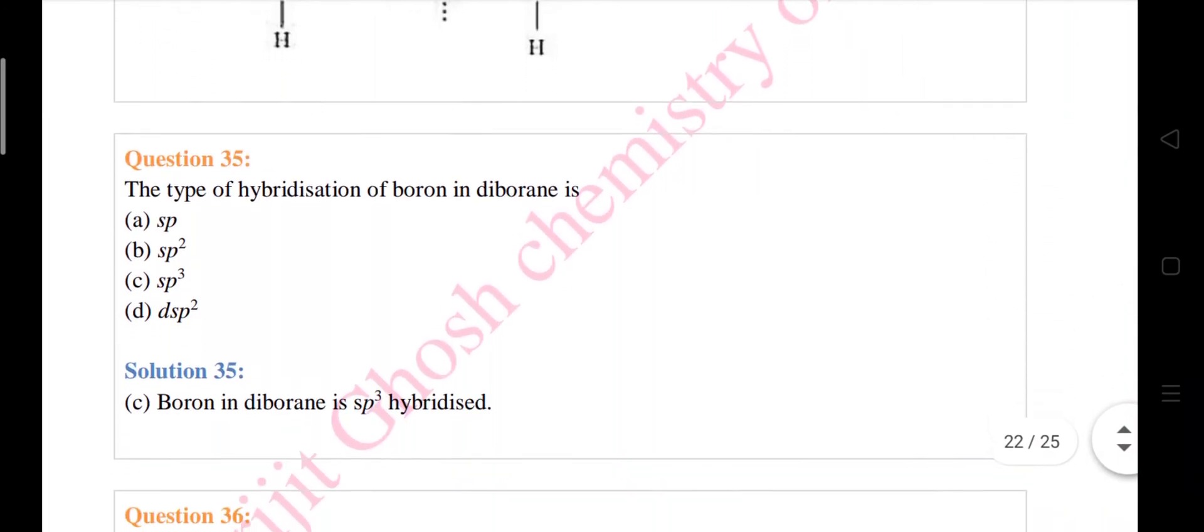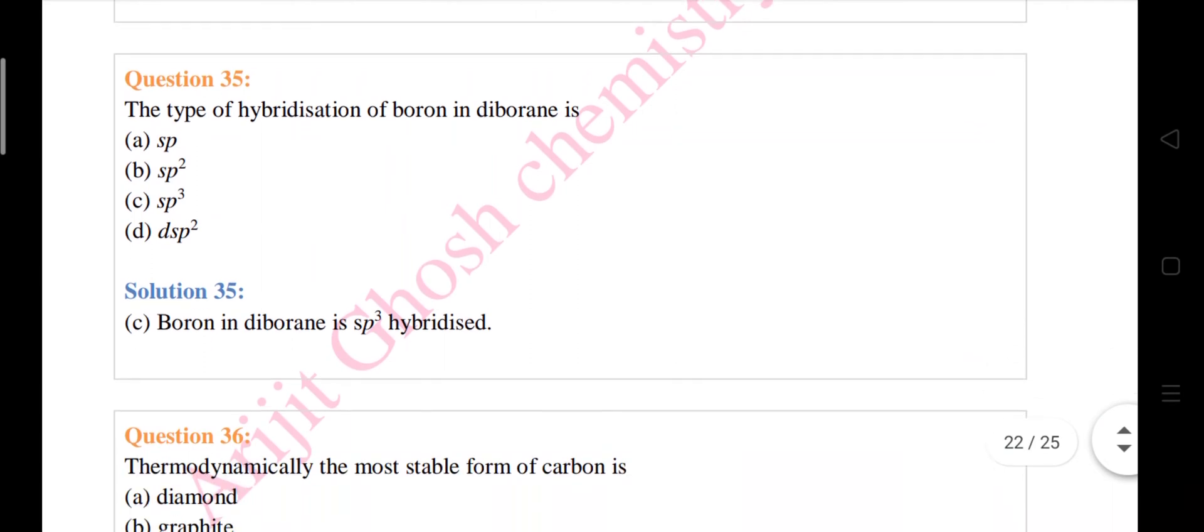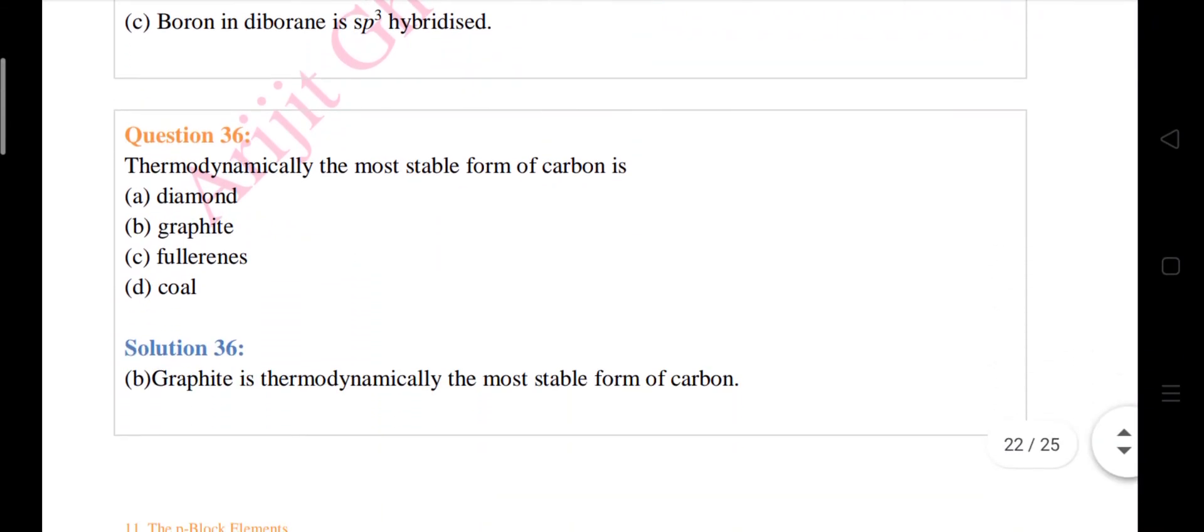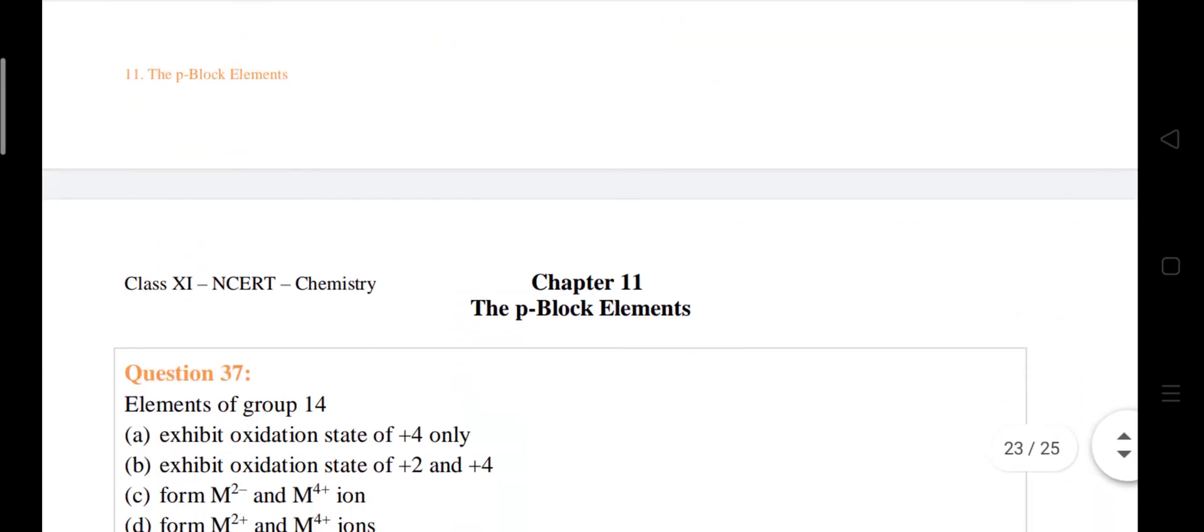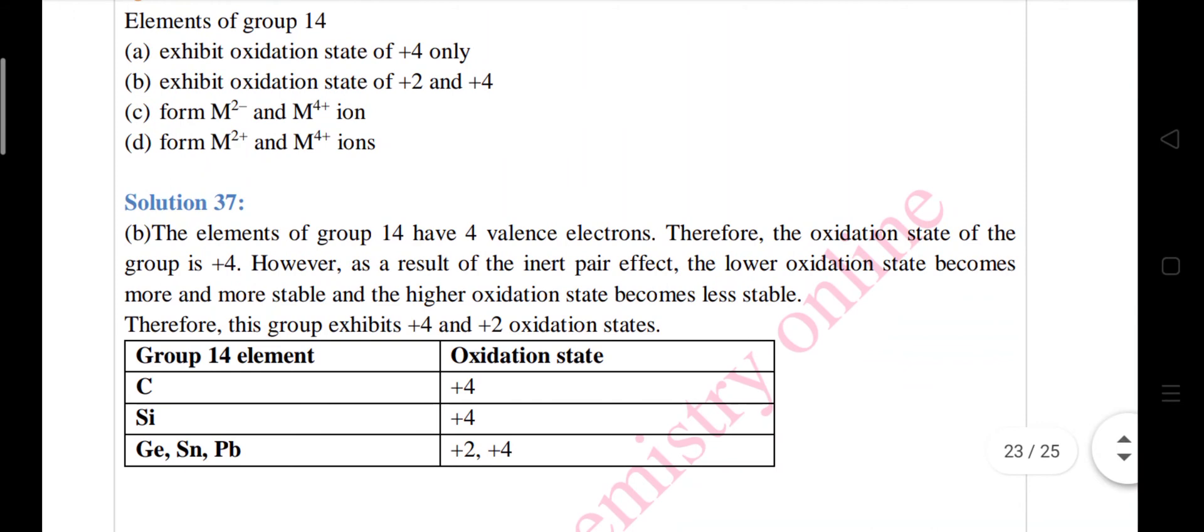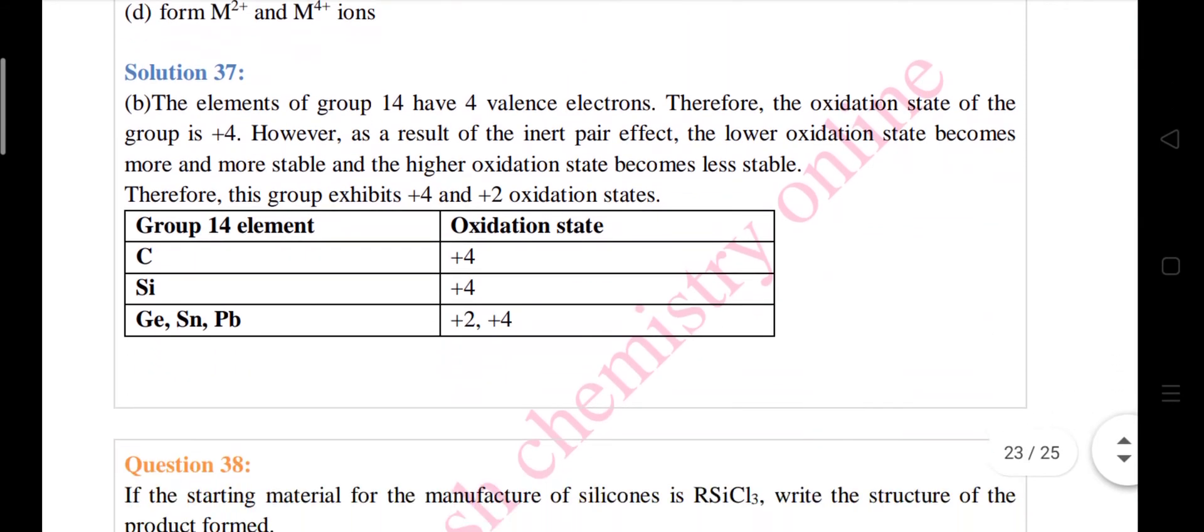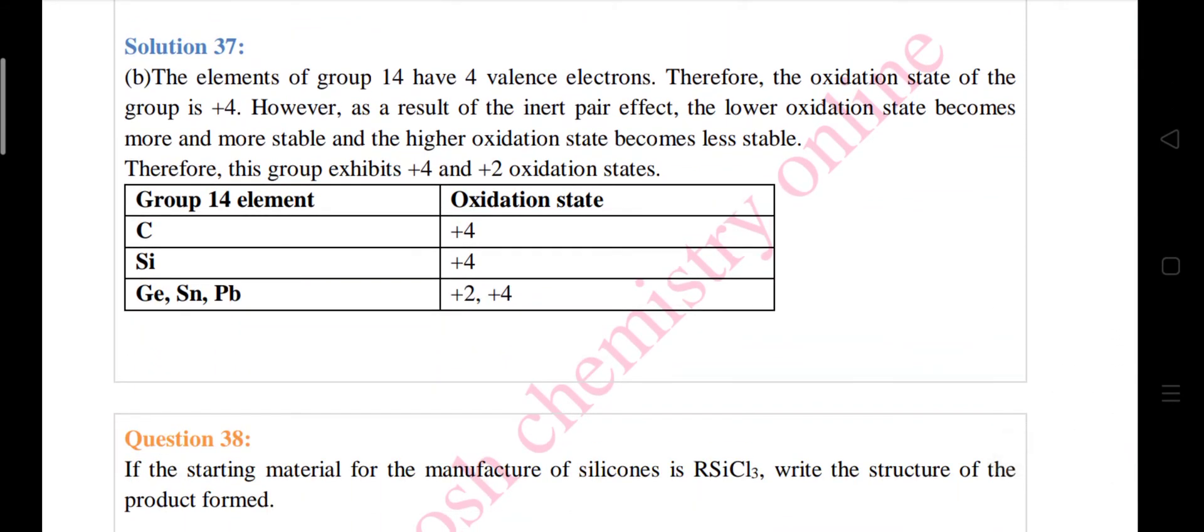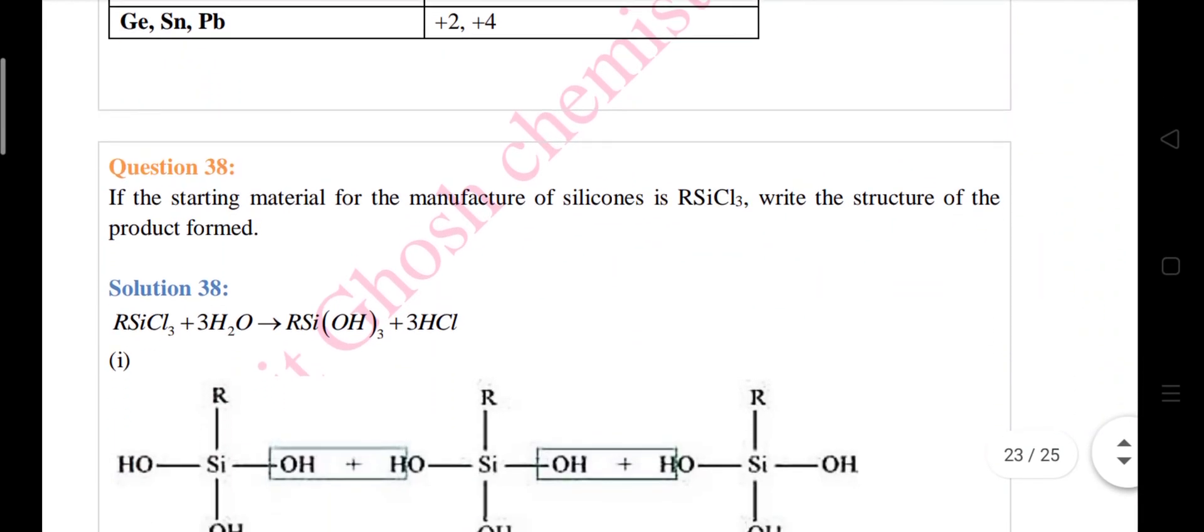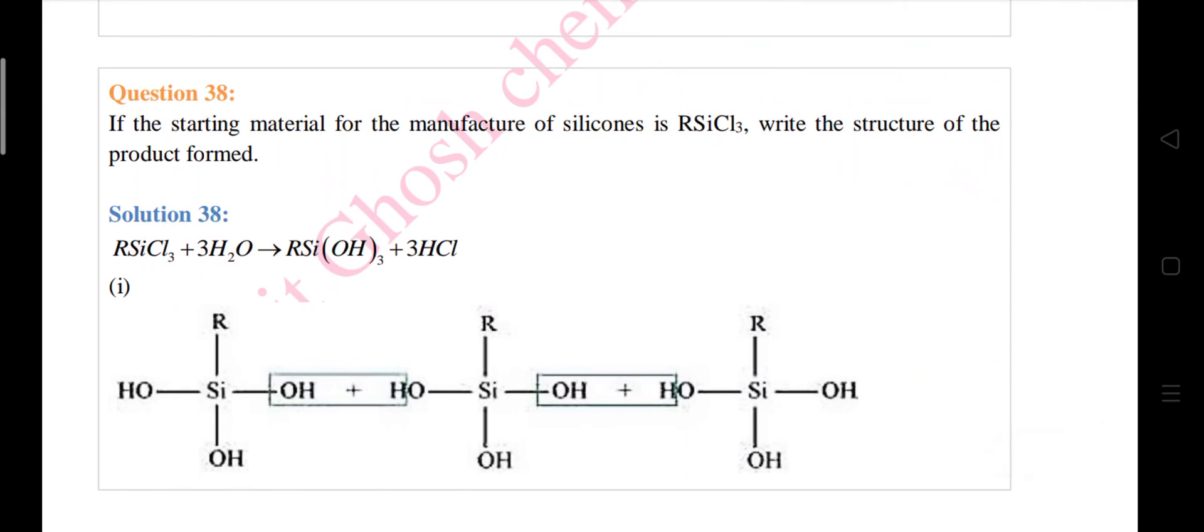Next is question number 35: Type of hybridization in boron in diborane. You all know this. These are all MCQ type questions students. Now 37, we are almost done with this video. So students don't forget to subscribe my channel. I am going to upload all the question answers of NCERT chemistry solved within this month. I will complete this video.